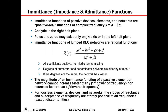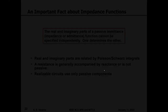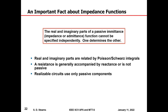For lossless elements, the slopes of the reactance and susceptance versus frequency are strictly positive. Foster's key results showed that poles and zeros of reactance functions exist only on the real frequency axis, the poles and zeros are simple, they have positive real residues, and poles alternate with zeros. Consequently there is necessarily a pole or zero both at zero frequency and at infinity — the key result that launched the network synthesis field.